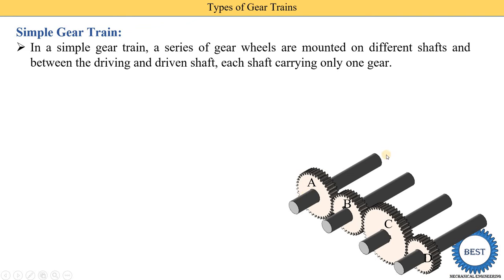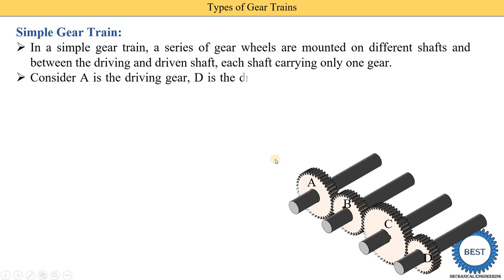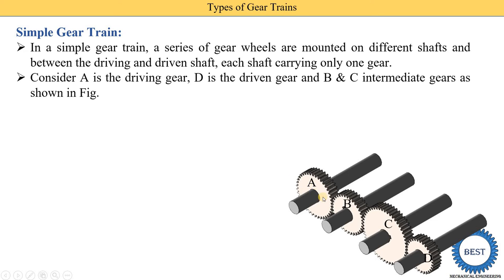Gear A is the driving shaft and D is the driven shaft. Between the driving and driven shaft, each intermediate shaft — shaft B and shaft C — carries only one gear. So on shaft B, gear B is mounted, and on shaft C, gear C is mounted. A is the driving gear, D is the driven gear, and B and C are the intermediate gears as shown in the figure. The basic fundamental of simple gear train is: on one shaft, only one gear is mounted.